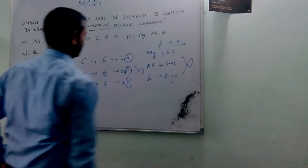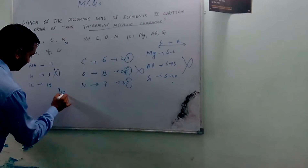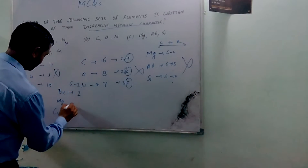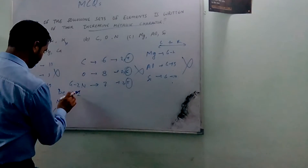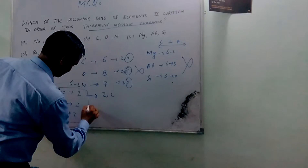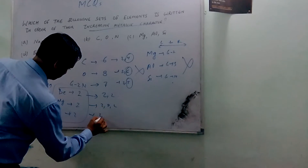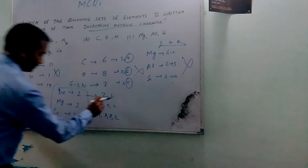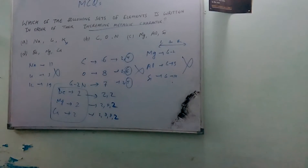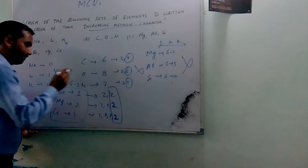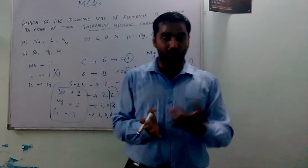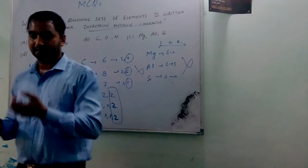For the fourth option, beryllium, magnesium, and calcium — they are all from group 2. Their outermost electrons are all 2. The best part is their number of shells increases: beryllium has 2 shells, magnesium has 3, and calcium has 4. When the number of shells increases with the same number of outermost electrons, this represents an increasing order of metallic character.